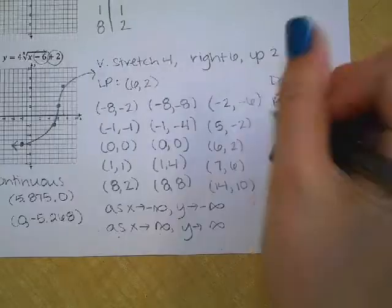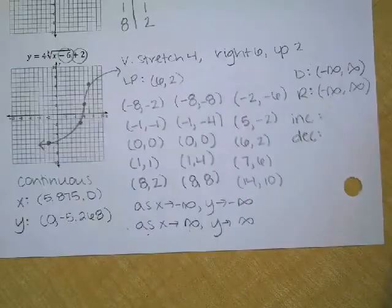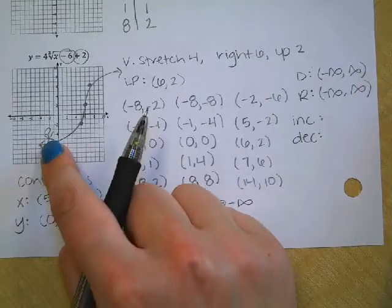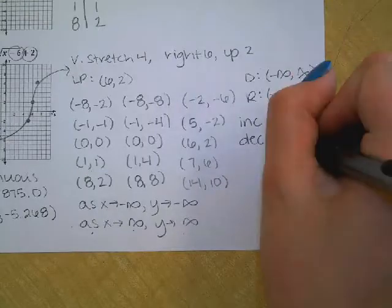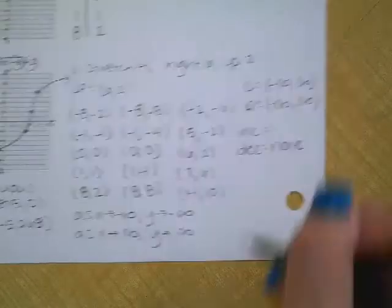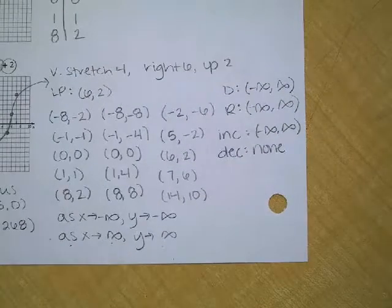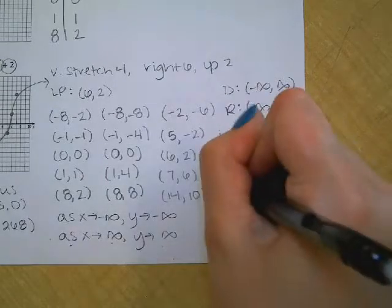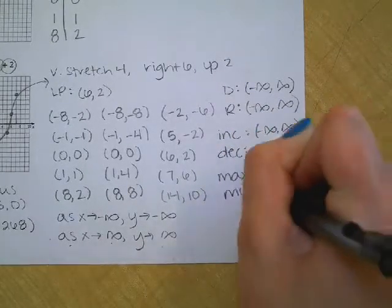What else do we find? Increasing and decreasing. It's going to be no decreasing because if I put a little stick figure, he's going to walk and then he's going to be climbing super steep and then he's going to be walking again. So for decreasing, we say none. And what do we put for increasing? Negative infinity to infinity. And then what else? Max and min. And what do we see for both of those? None.